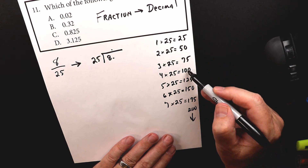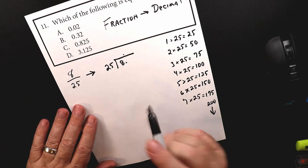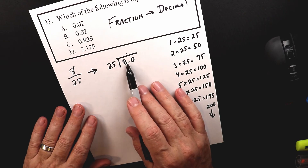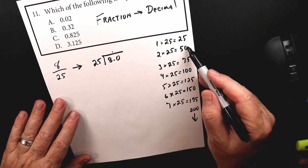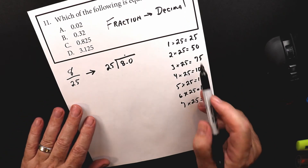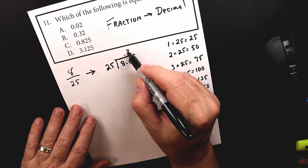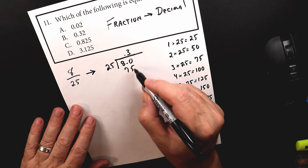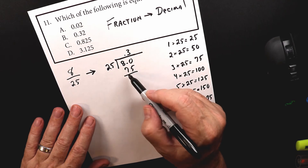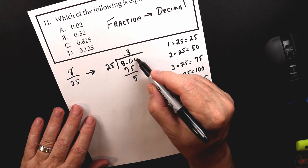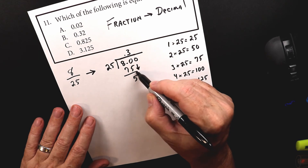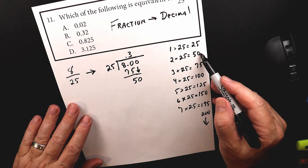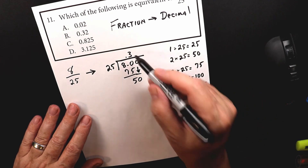So 25 goes into 80: too small, too small, too small, too big — so it's 75. That means three, because three times 25 is 75. Then 80 minus 75 is 5. Bring down a zero to get 50, and looking at the times table, 50 is right there — we're done because it's perfect.